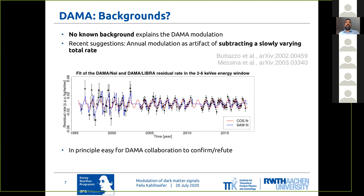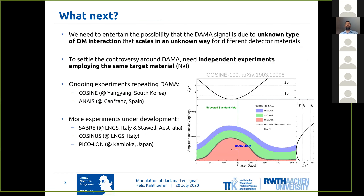So as has been for many years, the situation around DAMA is kind of inconclusive. We at least need to entertain the possibility that the DAMA signal is due to some unknown type of dark matter interactions that scales in an unknown way for different detector materials. I don't think any such theory has been worked out, so we don't really know of any plausible model of dark matter that would bring the DAMA signal into agreement with other null results.